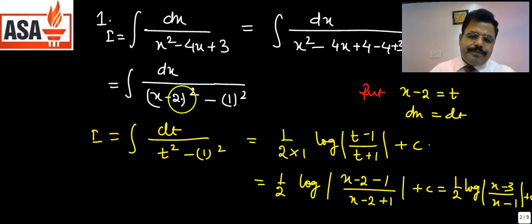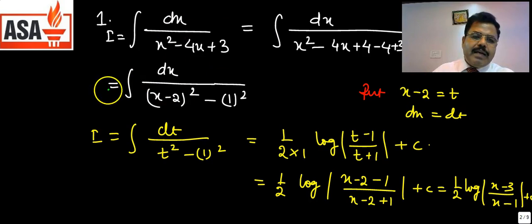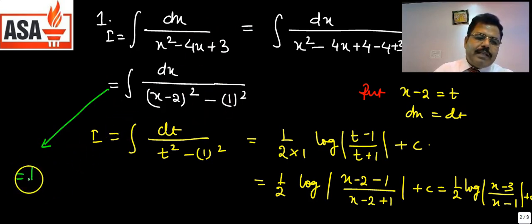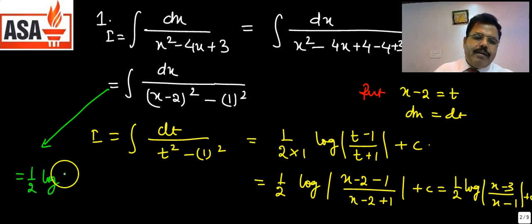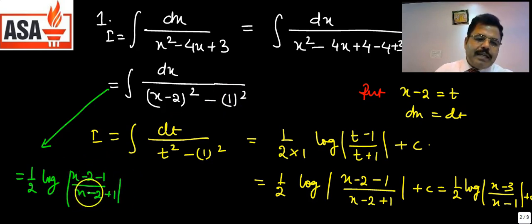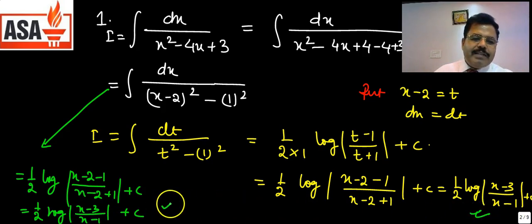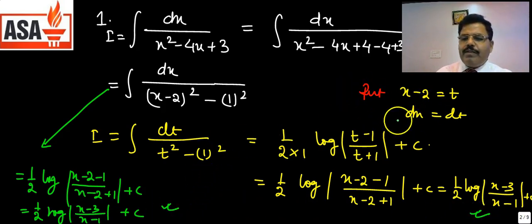This same question can also be solved directly using the formula without substitution. For dx upon x² minus a², the answer is 1/(2a) log|(x−a)/(x+a)|. Here the roots are 1 and 3, so the answer is directly 1/2 log|(x−3)/(x−1)| plus c — the same answer, no substitution needed.